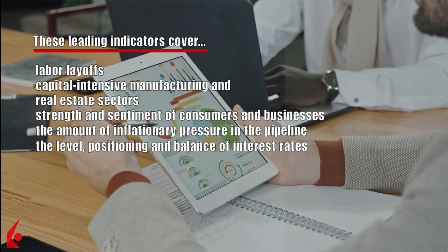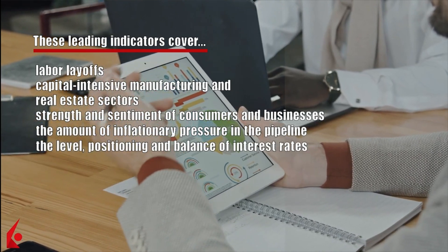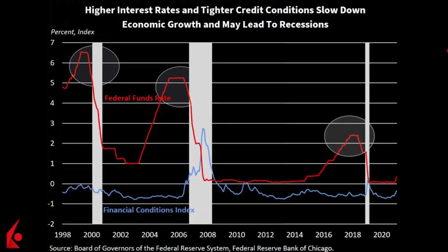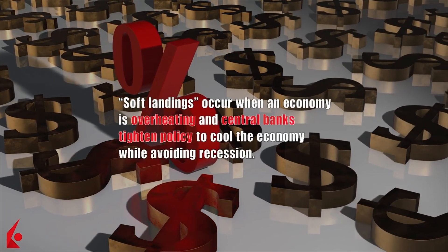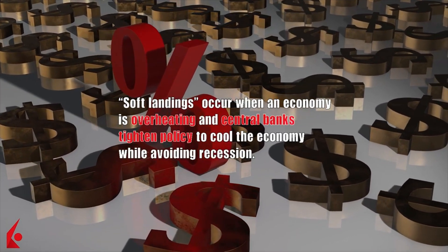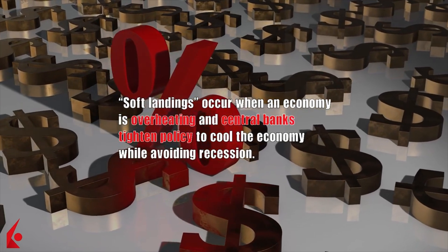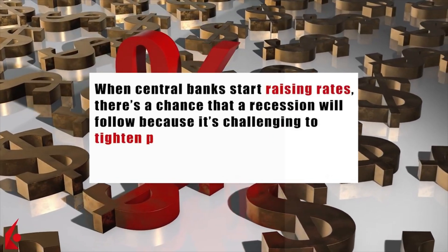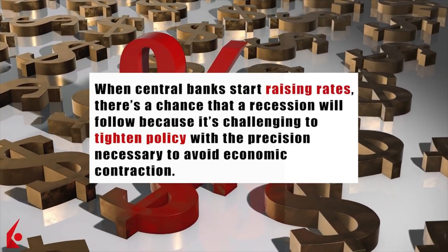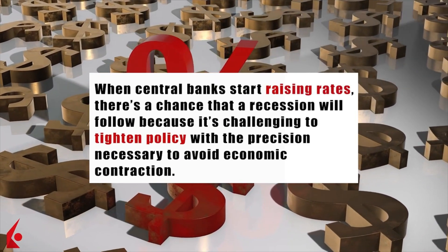In general, higher interest rates and tighter credit conditions slow down economic growth and may lead to recessions. Historically speaking, central banks have had plenty of difficulty attempting to engineer soft landings. Soft landings occur when an economy is overheating and central banks tighten policy to cool the economy while avoiding recession. When central banks start raising rates, there's a chance that a recession will follow because it's challenging to tighten policy with the precision necessary to avoid economic contraction.